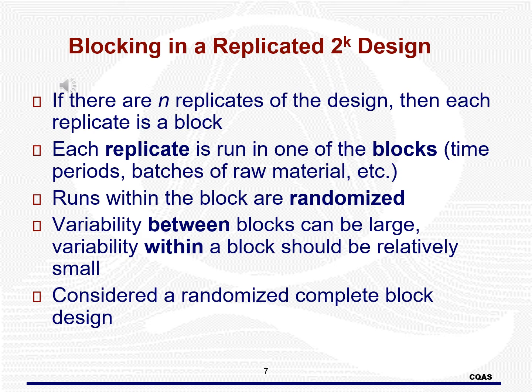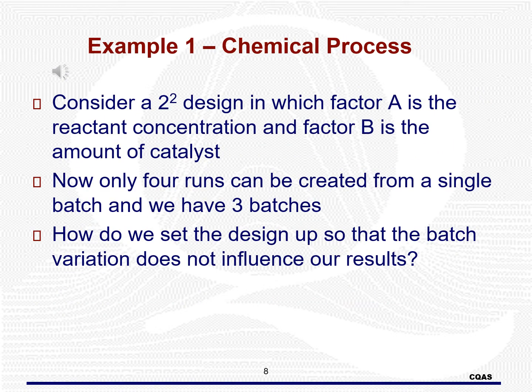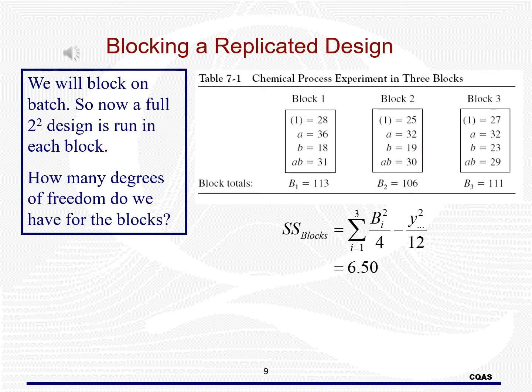Our goal is to have variability between blocks be larger than variability within blocks. This type of design is called a randomized complete block design. Here is an example where we have two factors, each at two levels, with three replicates for a total of N = 12 runs. There is a restriction that only four runs can be made from a single batch, so we would need to run three batches. We will block on batch to remove the variation from our results. This is a randomized complete block design, since we have a full replicate run in each block.